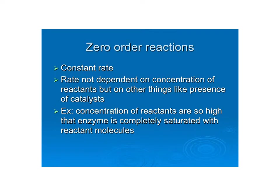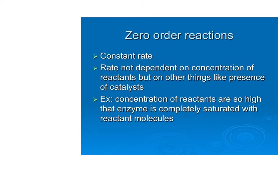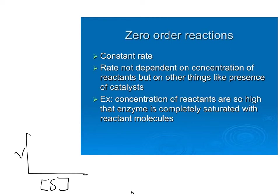It is possible to have a zero order reaction. That means that the rate does not change — you can keep adding more and more substrate, it doesn't matter, it's not going to get any faster. The only way to make it faster is if you add more enzyme or catalyst. The enzyme has a finite number of binding sites, so once all the binding sites are occupied, you can keep throwing substrate at it but it can no longer bind, so it's as fast as it can go. On a graph of rate versus substrate, if it's zero order, it's a straight line.